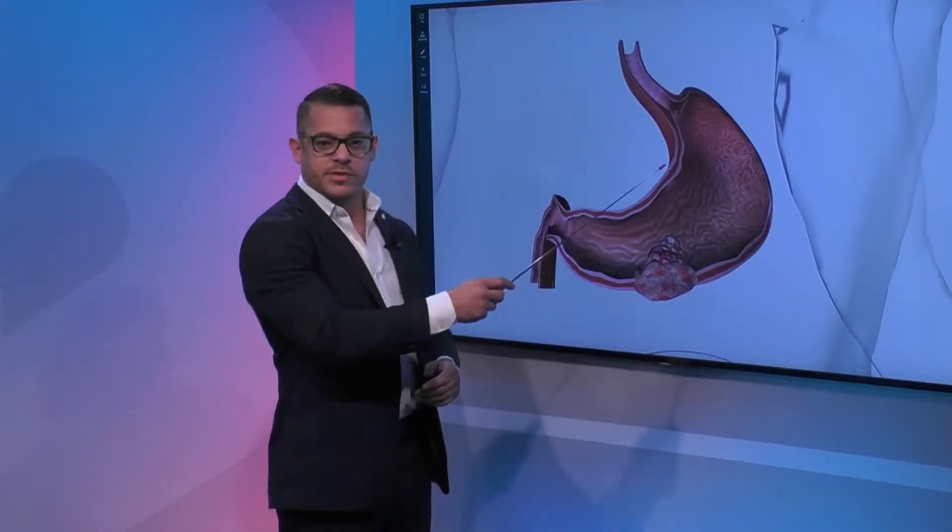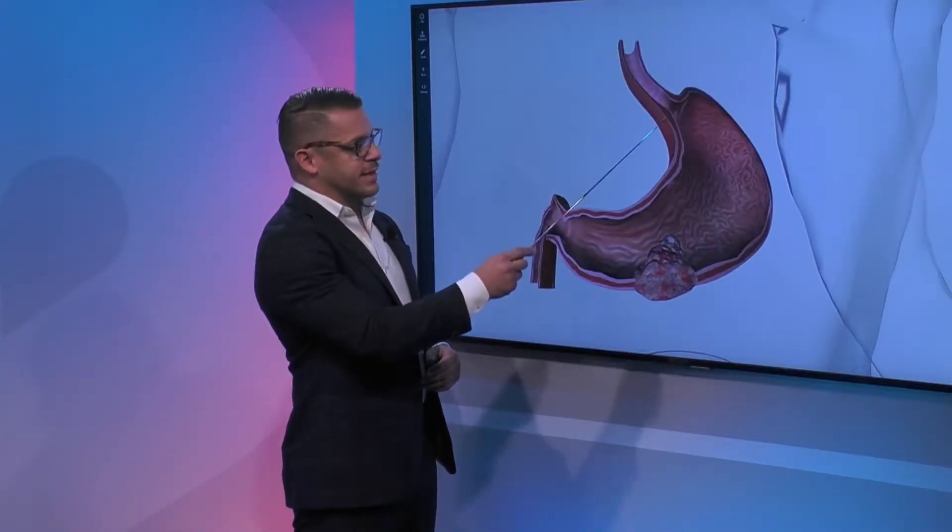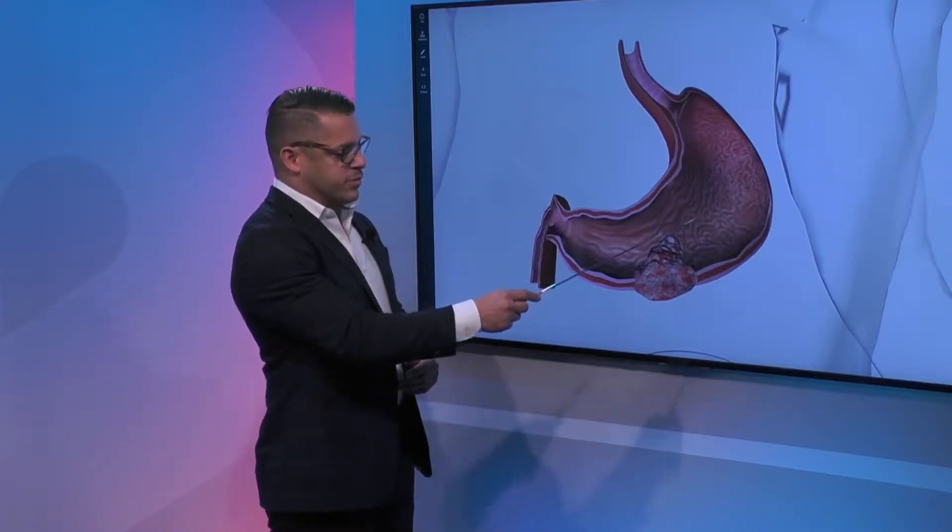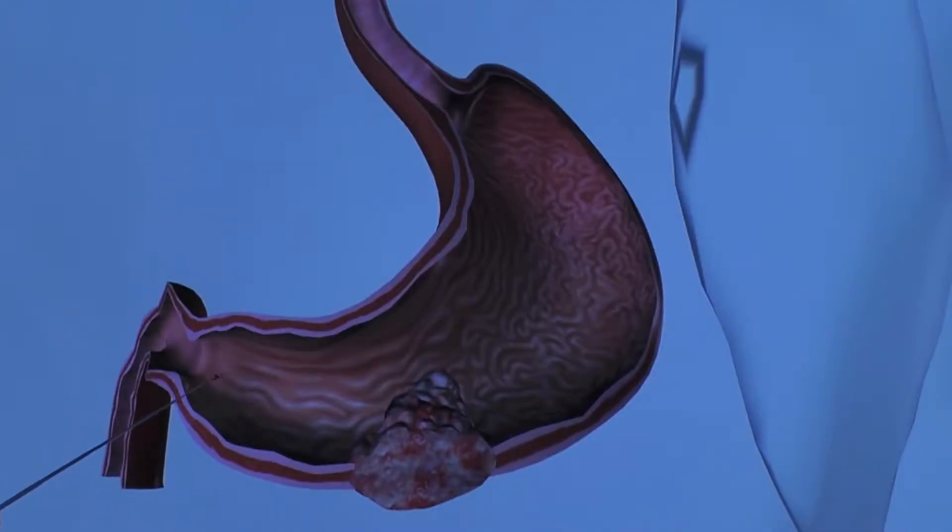So this is a diagram of the stomach. Here we have the esophagus that leads into the proximal part of the stomach, moves distally, this is the antrum, and eventually gets into the duodenum which is the beginning portion of the small bowel.